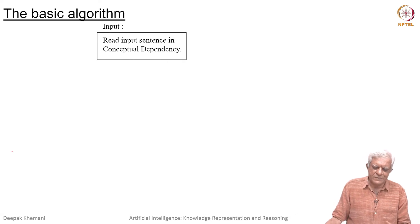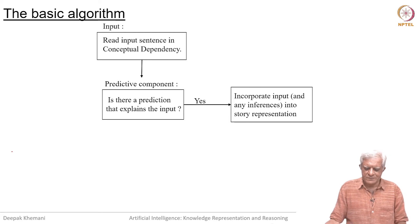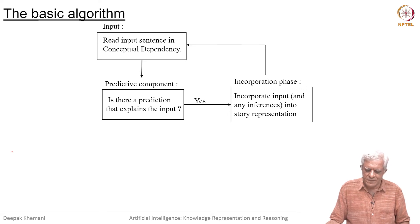This is the basic algorithm: read input sentence in CD theory. Eliot or some such program will do that for you. Go to the predictive component and see if you were expecting to hear that, is there a prediction that explains the input. If the answer is yes, then incorporate that input into your story representation and any inferences that you have made on the way into the story representation. Whenever an input meets a prediction, we have understood that we expected to hear this and therefore we construct the story. On the way if you had made any inferences, they are also added to the story. You go to the incorporation phase and read the next input.